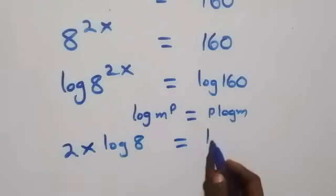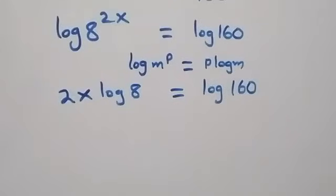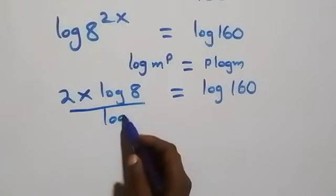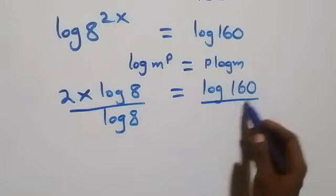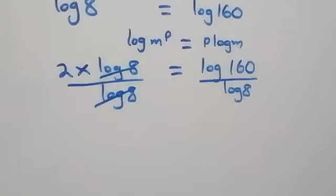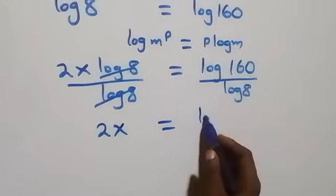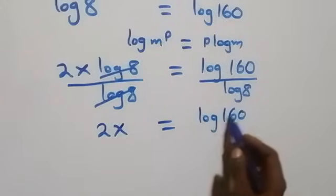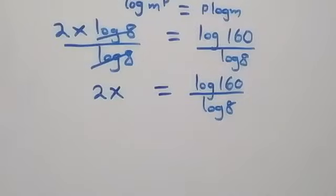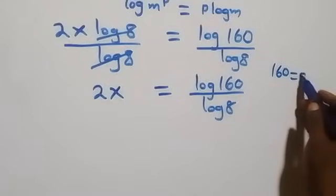Then equals to log 160. From here, we divide both sides by log 8 — divide here by log 8 and also divide this side by log 8. That is, log 8 cancels each other and we are left with 2x, which equals to log 160 over log 8.